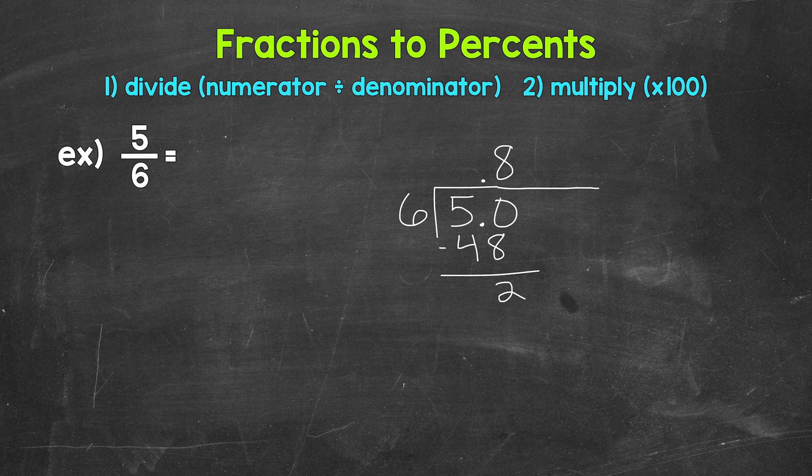Subtract 50 minus 48 is 2. We don't have that clean cut zero at the bottom, so we can continue on by using another zero that we can bring down. So now we have 20. 20 divided by 6. How many 6's in 20? Well, 3. That gets us to 18. 3 times 6 is 18. Subtract 20 minus 18 is 2.